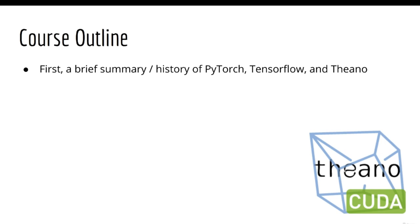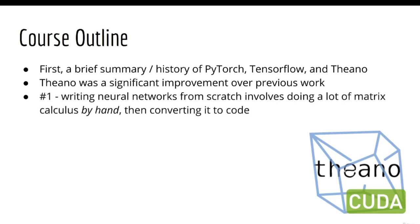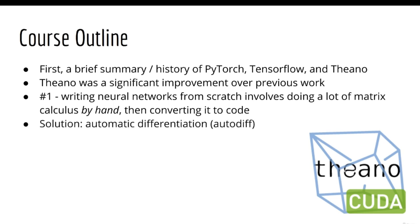So in the beginning, there was Theano. Theano was a significant improvement over what was being done previously for two major reasons. Number one, writing neural networks from scratch involves doing a lot of matrix calculus by hand and then copying those equations into code. The Theano library was the first to innovate in this area using automatic differentiation, or autodiff for short — meaning you don't have to write down calculus equations since the computer will do that for you.